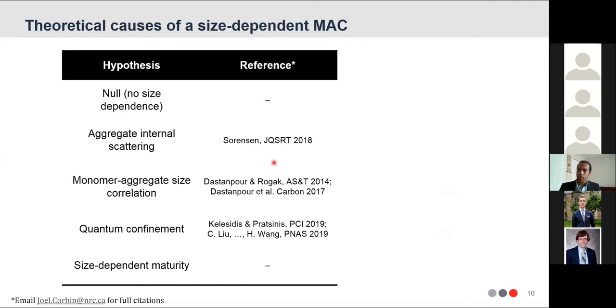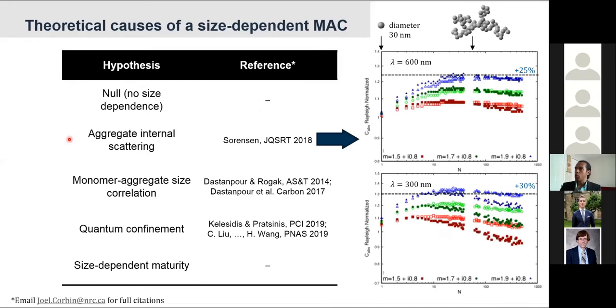So there are a few different hypotheses that we can find in the literature for why there might be a size-resolved MAC or size-dependent MAC. Well, the null hypothesis is that there wouldn't be one. If you extend that hypothesis by accounting for aggregate internal scattering, you would calculate an absorption cross-section, as shown on the right, where the accurate numerical model here predicts something like a 25-30% increase, depending on the size of the monomers, the wavelength that you're using. And at some point, that may decrease slightly. So I refer to this as internal scattering, because this means that we actually do have interaction between the monomers, unlike the RDG model.